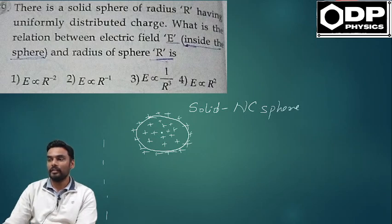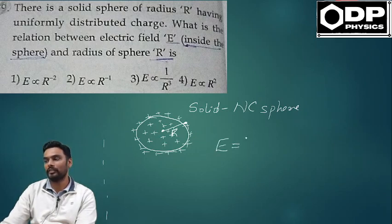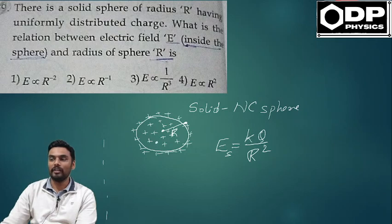This is the radius of the sphere. We have an electric field on the surface. On the surface, the electric field is a simple formula which is kQ by R squared, where R is the radius of the sphere.